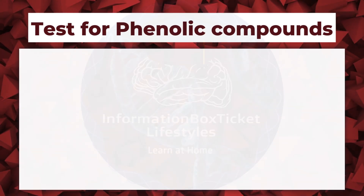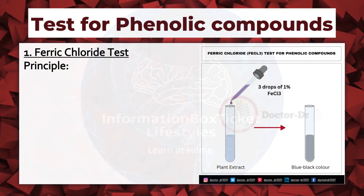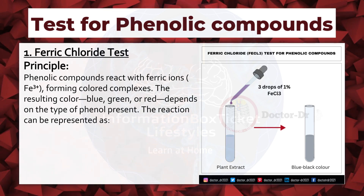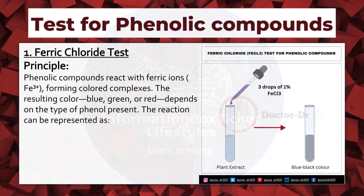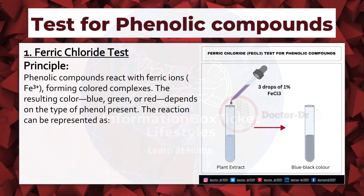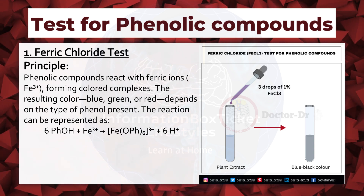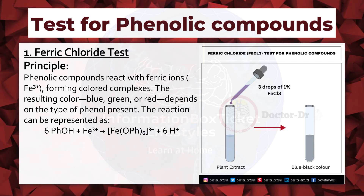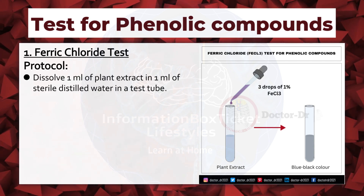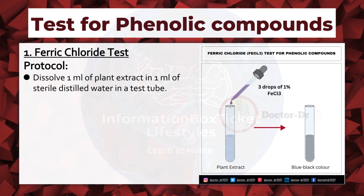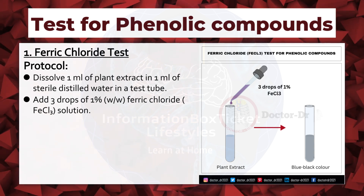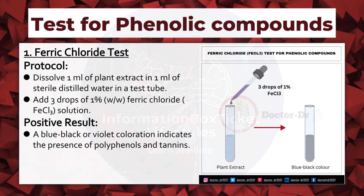Test for Phenolic Compounds. Ferric Chloride Test. Principle: phenolic compounds react with ferric ions forming colored complexes. The resulting color — blue, green, or red — depends on the type of phenol present. The reaction can be represented as 6 molecules of phenol reacting with 1 iron(III) ion to produce a hexaphenol-iron complex and 6 hydrogen ions. Protocol: dissolve 1 ml of plant extract in 1 ml of sterile distilled water, add 3 drops of 1% ferric chloride solution. Positive result: a blue-black or violet coloration indicates the presence of polyphenols and tannins.